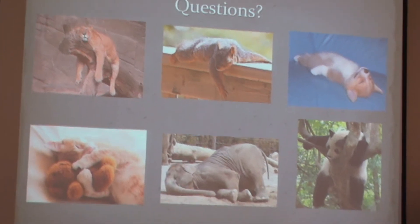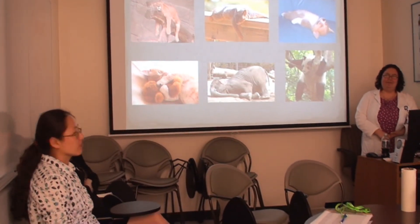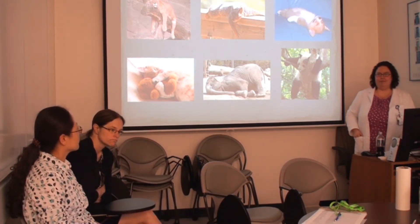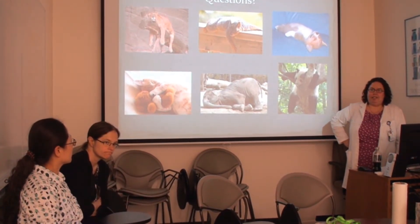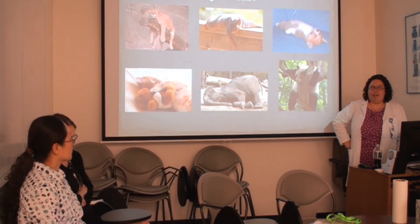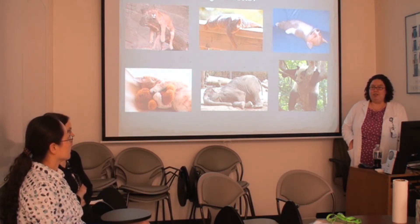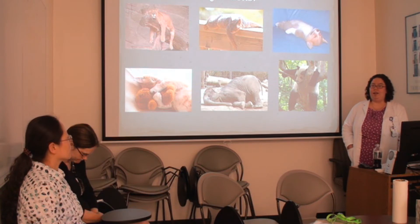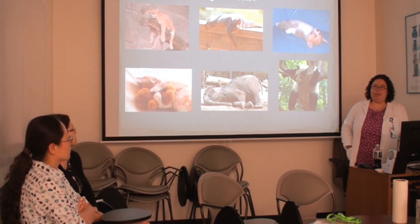Regarding gabapentin in the geriatric population — starting at a lower dose is appropriate. A lot of geriatric patients also have kidney disorders, so the total amount of gabapentin you can even use is usually pretty low depending on renal function. Start low with any of them.